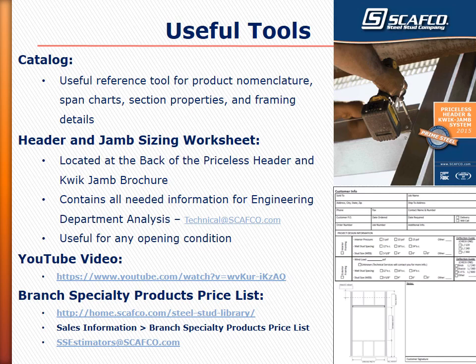The last useful tool is the branch specialty product price list, located on the Scafco intranet under the sales information tab. This is an Excel document with tabs that go to pricing information for the HD headers, under-14-foot HDR headers, over-14-foot HDR headers, and the quick jam studs. For any questions regarding this tool or additional pricing information, please contact the estimating department at Scafco.